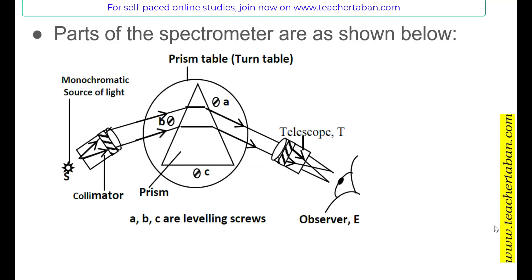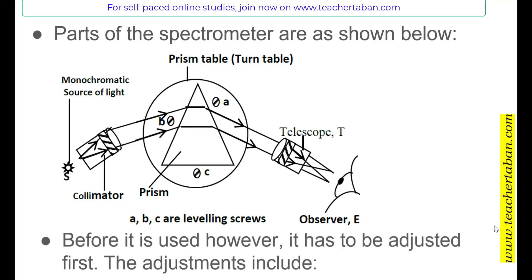The spectrometer is basically made up of a collimator, whereby you have a source of light — normally we use white light. Then we have the turntable, where the prism is placed. On the turntable, we have the screws A, B, C — those are the very important ones you should be seeing later on in the video. And then the telescope, with the observer E. In case the spectrometer has to be used in any measurement, the first thing to do is always to adjust it — to make sure that everything is working properly before you use it.